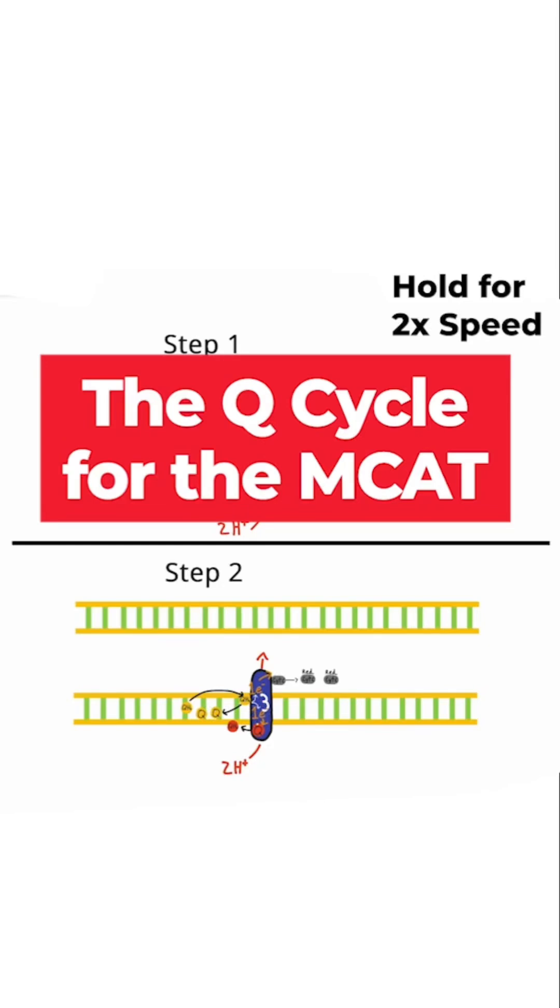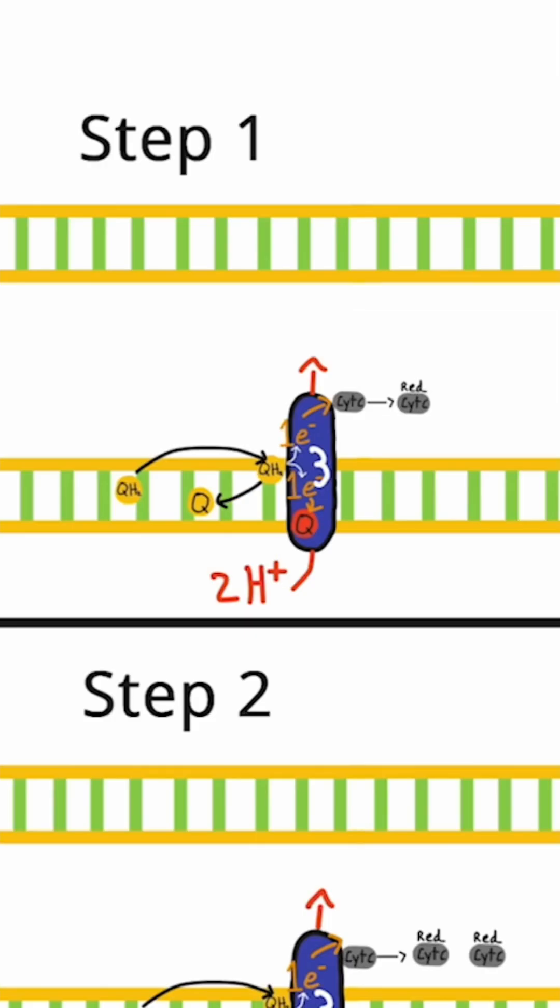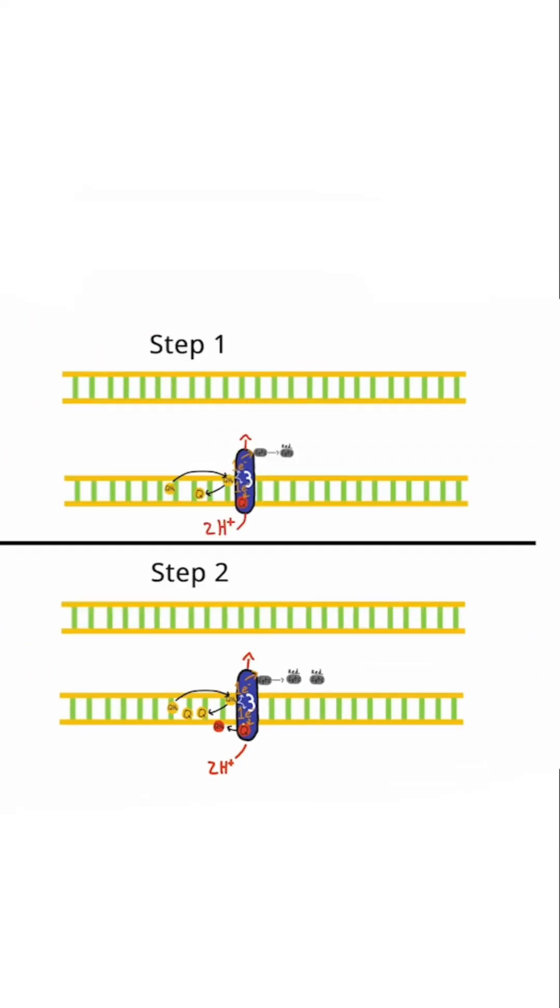Take just 150 seconds to finally understand the Q-cycle. The Q-cycle is a two-step process that takes place at complex 3 of the electron transport chain.